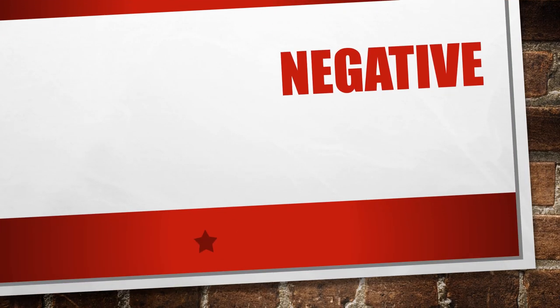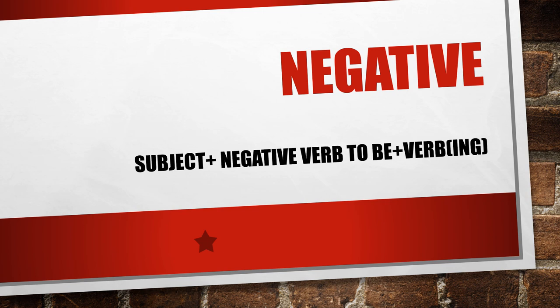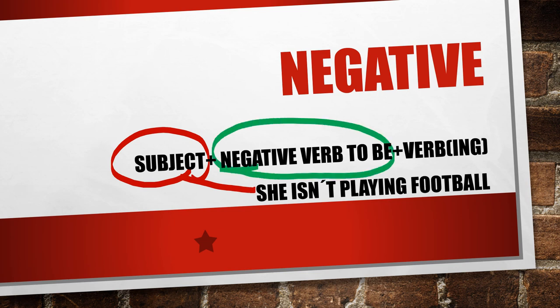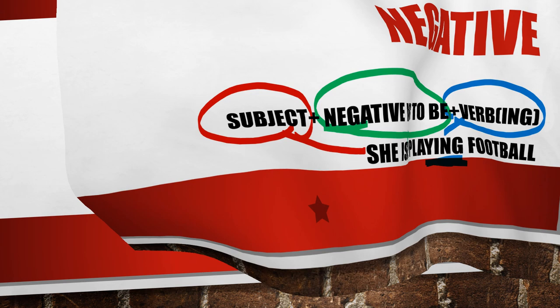Negative form. The structure is subject plus negative of verb to be plus verb ending in -ing. So we can see here the subject: she. Negative of verb to be: isn't. And verb ending in -ing: playing. She isn't playing football, for example.